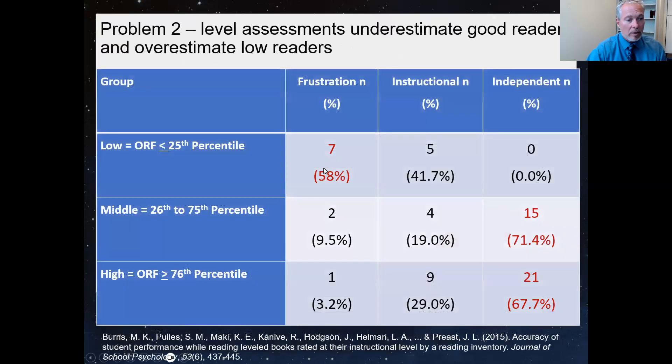Problem number two, a study we published in the Journal of School Psychology, we had kids read the book that was at their supposed level. So if they were an M, they read an M book, a G, they read a G book. What we found was we also had a different measure of reading to group them as low, middle, or good readers. Among the good readers, they read the book that was supposedly their instructional level, according to the benchmark assessment system. They read that book at the independent level, about two-thirds to almost three-fourths of the time for high and middle readers. So for these kids, it may have underestimated their skills. We don't know, they may have.